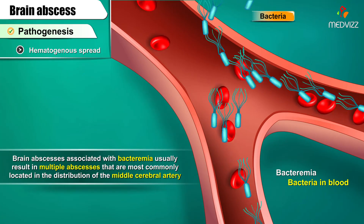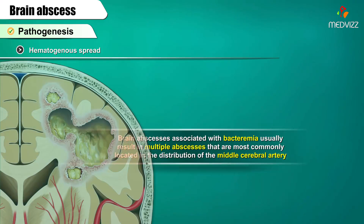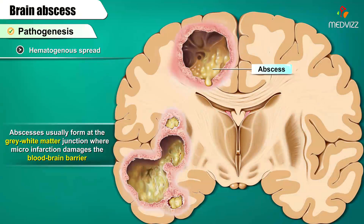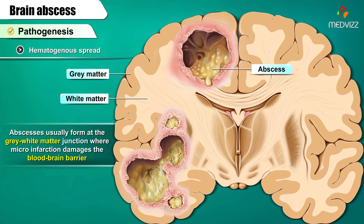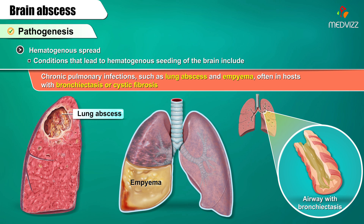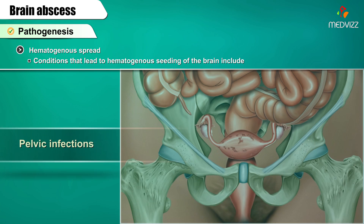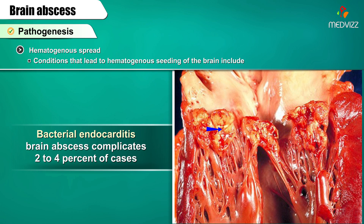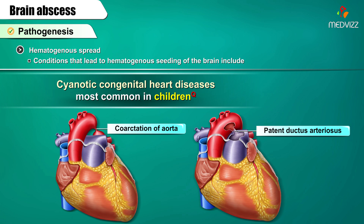Hematogenous spread: Brain abscesses associated with bacteremia usually result in multiple abscesses most commonly located in the distribution of the middle cerebral artery. Abscesses usually form at the grey-white matter junction where microinfarction damages the blood-brain barrier. Conditions leading to hematogenous seeding include chronic pulmonary infections such as lung abscess and empyema, often in hosts with bronchiectasis or cystic fibrosis, as well as skin, pelvic, and intra-abdominal infections, esophageal dilation, endoscopic sclerosis of esophageal varices, and bacterial endocarditis.